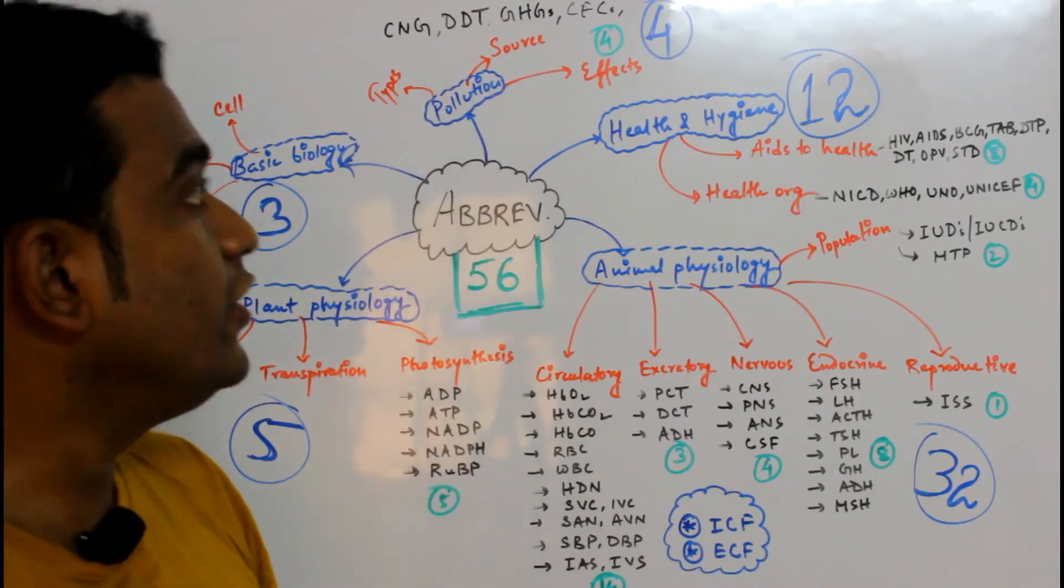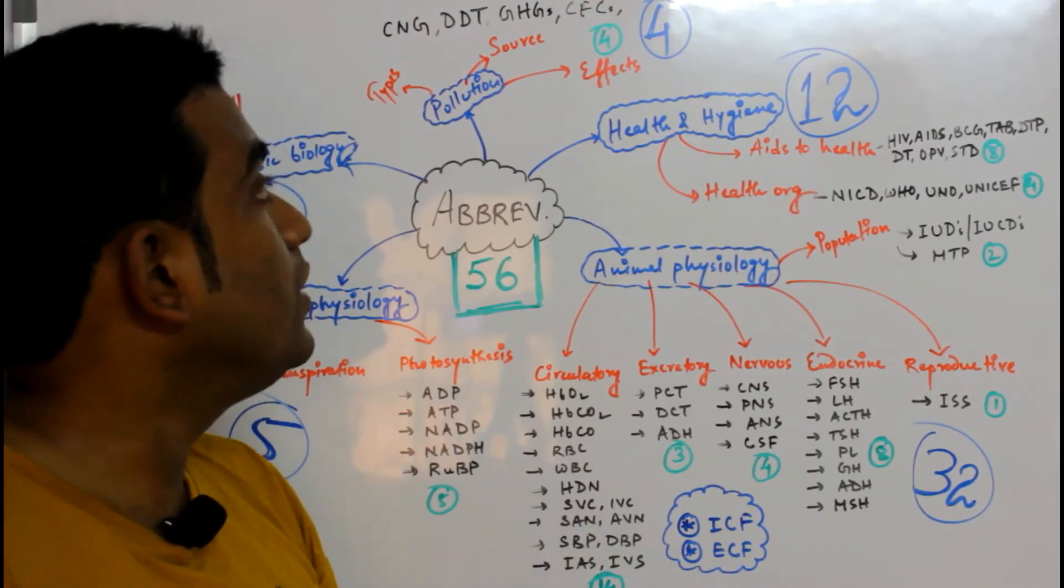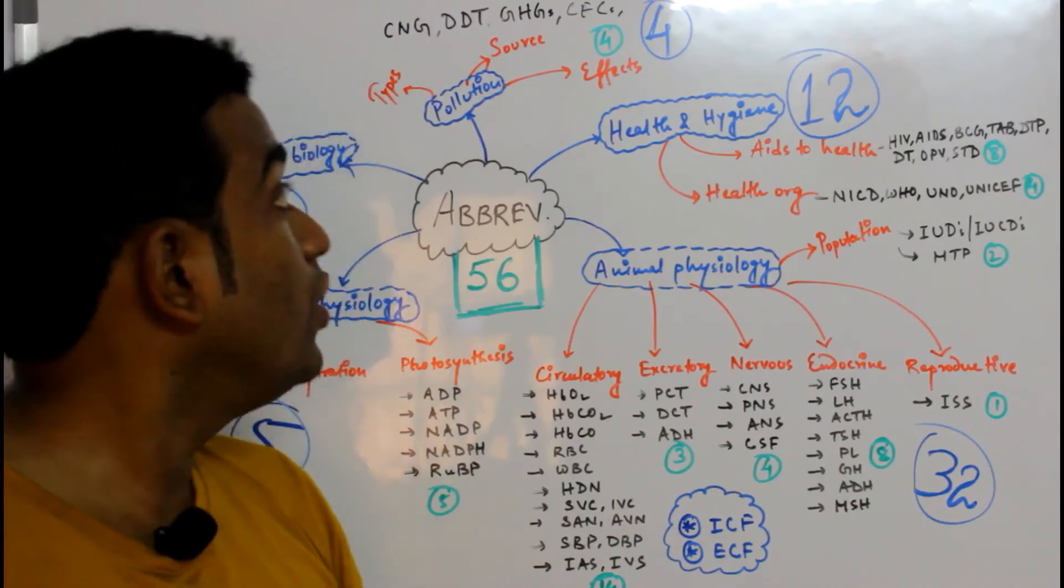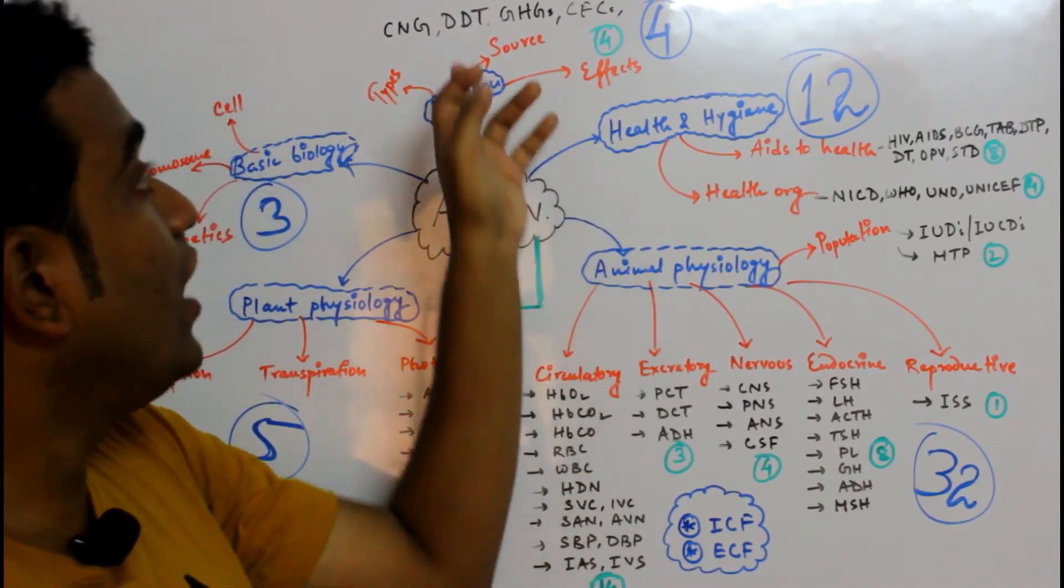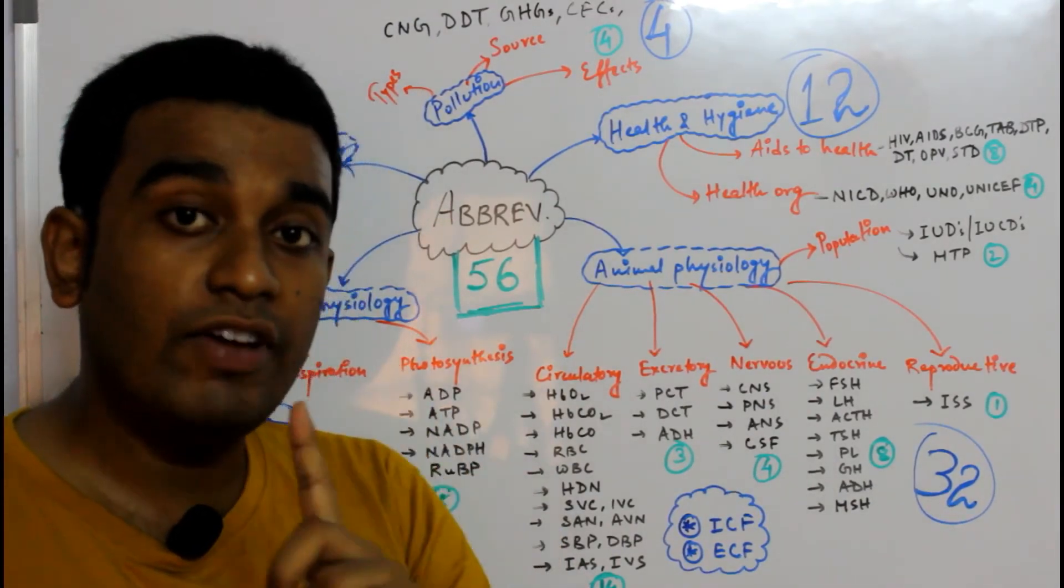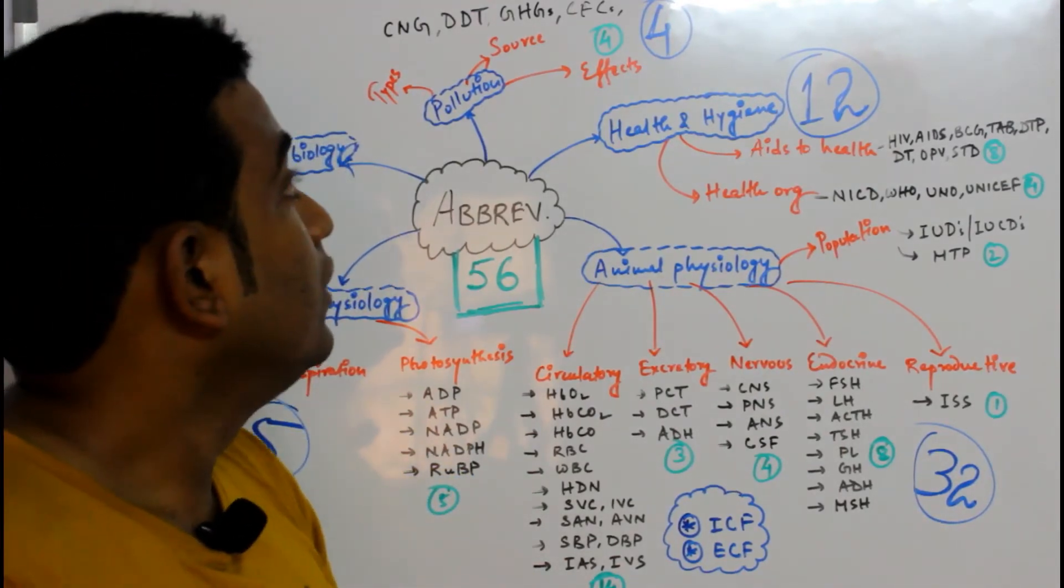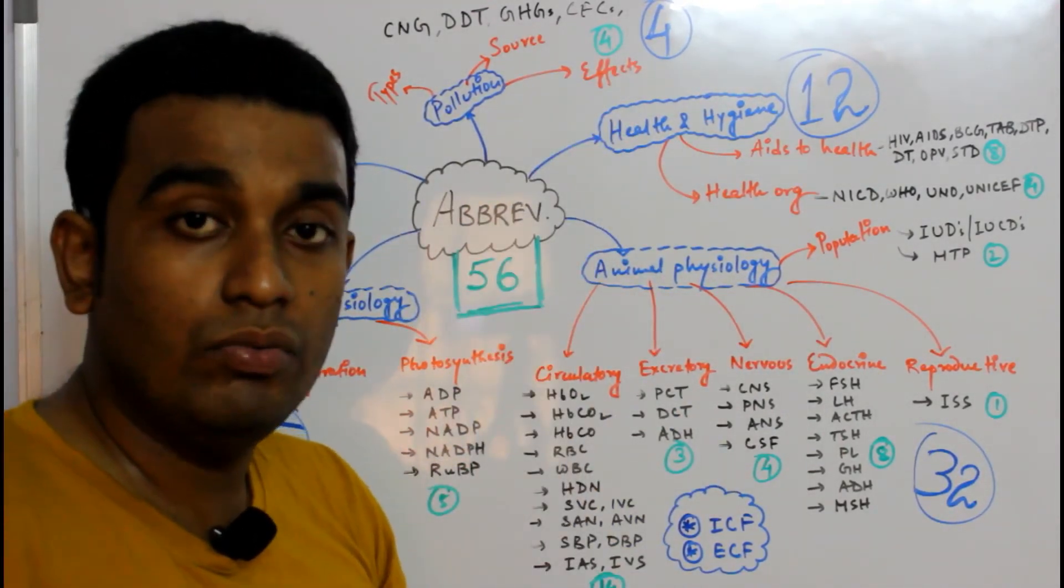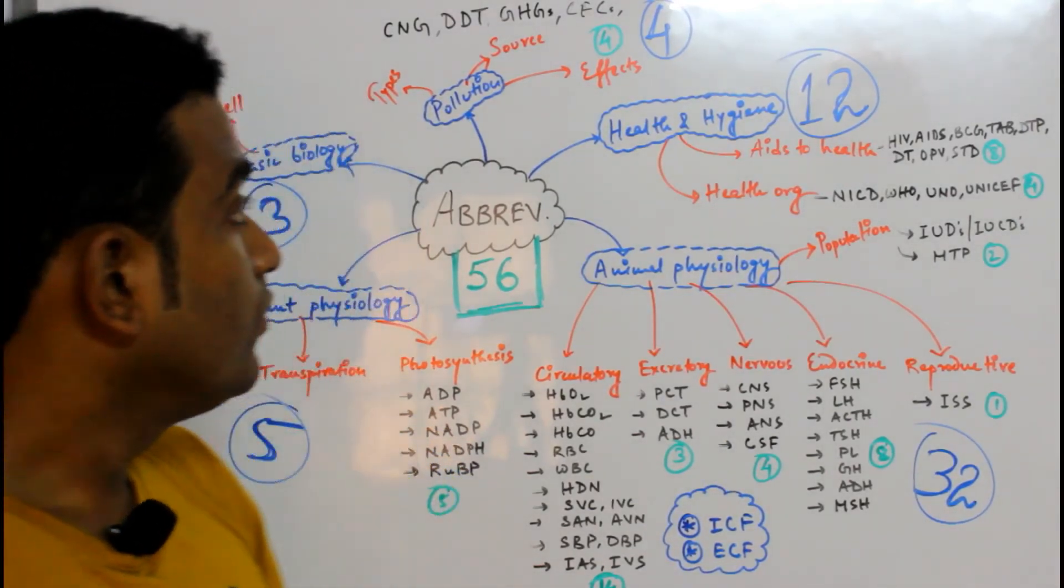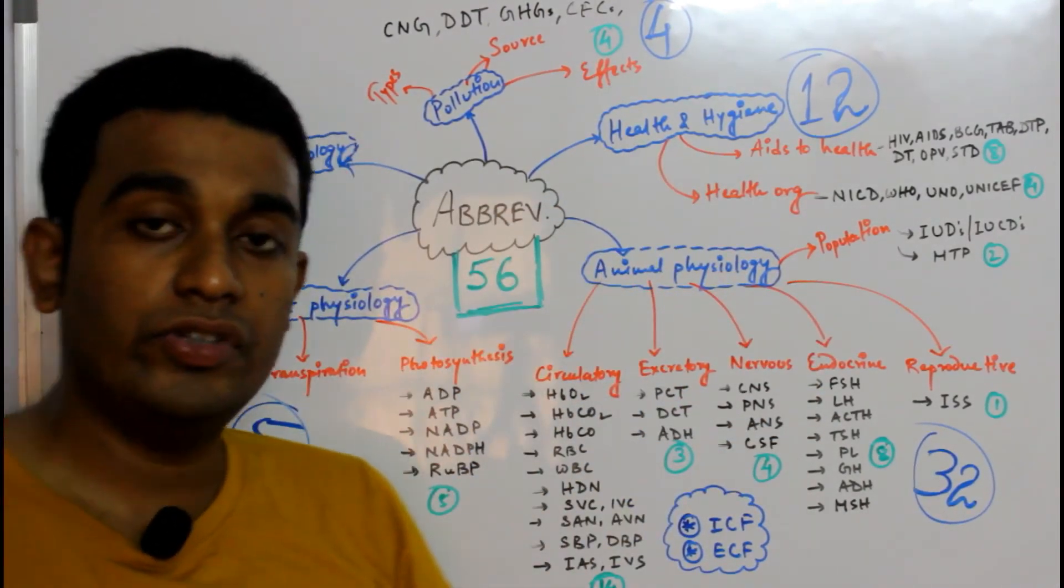Coming to the last unit, Pollution, I've got four abbreviations: CNG (Compressed Natural Gas), DDT (Dichlorodiphenyltrichloroethane), GHG (Greenhouse Gases) - not in the textbook but very important for global warming, and CFCs (Chlorofluorocarbons). All together you have 56 abbreviations.